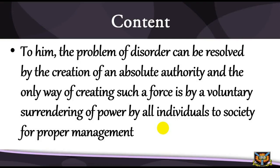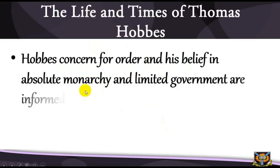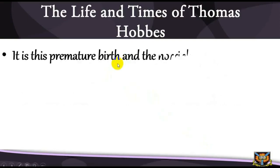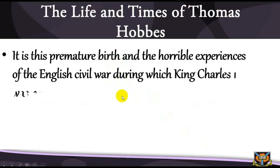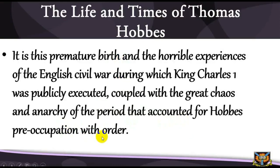The life and times of Thomas Hobbes: Hobbes's concern for order and his belief in absolute monarchy and limited government are strongly informed by his historical experiences. In his biography, Hobbes admits that he was born prematurely, alongside fear, on the very day the Spanish Armada landed in Britain in 1588. It is this premature birth and the horrible experiences of the English Civil War — during which King Charles I was publicly executed — coupled with the great chaos and anarchy of the period, that accounted for Hobbes's preoccupation with order.